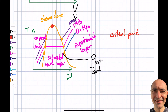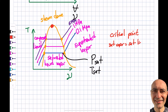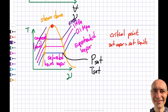Notice that the steam dome doesn't go on forever — it converges to a single point at the top. That point is called the critical point. As pressure increases, the mixture region gets shorter and shorter until the saturated liquid and saturated vapor become the same point. Above the critical pressure, the isobaric line passes through the dome without a phase-change plateau.